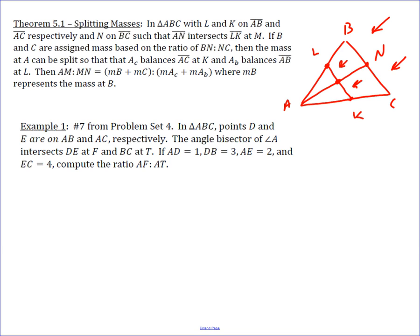then you can come up with a mass here and a mass here that balances on L and K. And then you can add those two masses together to get your mass on A and then proceed normally with mass points at that point. So let's show you how that works.